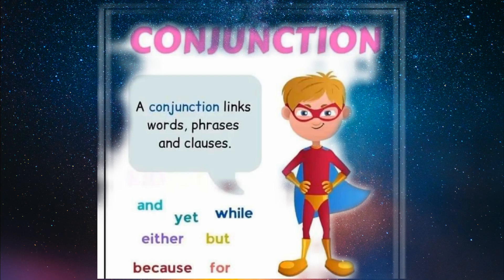Conjunction — a conjunction links words, phrases, and clauses, or connects two words or two sentences. That is called a conjunction. And, yet, while, either, but, because, for — یہ سب conjunction میں آتے ہیں۔ Conjunction وہ لفظ ہوتا ہے جو دو words یا دو sentences کو آپس میں ملائے، آپس میں connect کرے۔